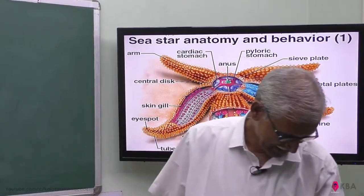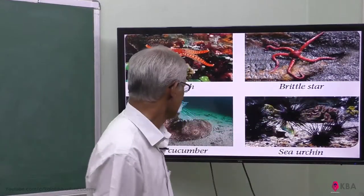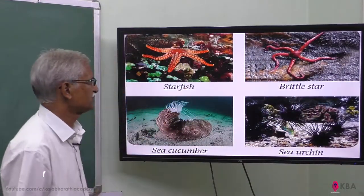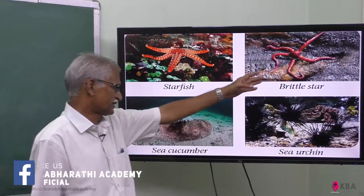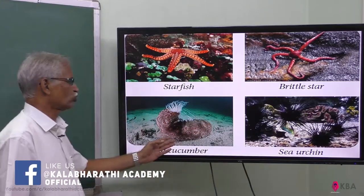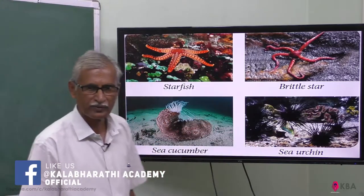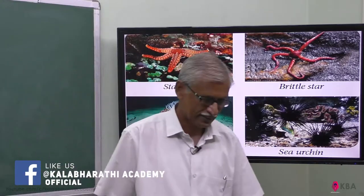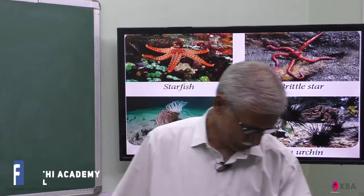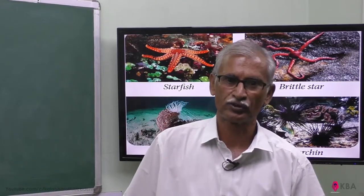Now we will see some examples. This is a starfish. This is a brittle star. This is a sea urchin. This is a sea cucumber. These are all some species of Echinoderms. With these, we close Echinodermata. Thank you students.